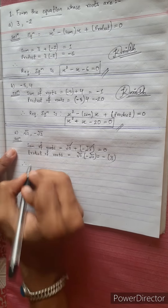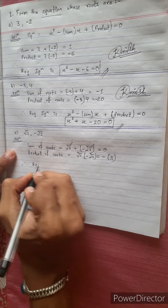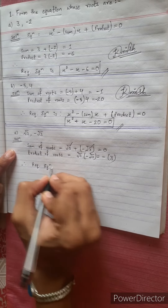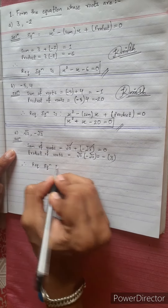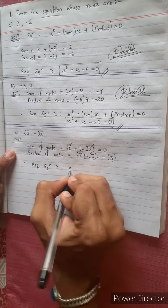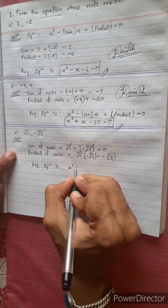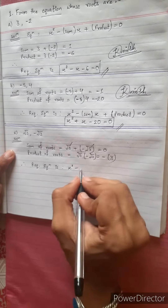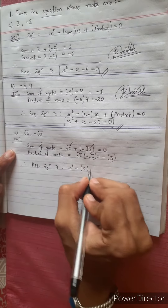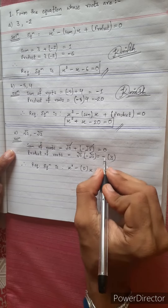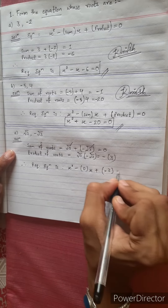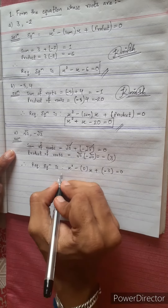Therefore, we analyze the quadratic equation. The required equation is x squared minus sum of roots. The sum of roots is 0, so we have 0 into x, plus product of roots minus 3, equal to 0.